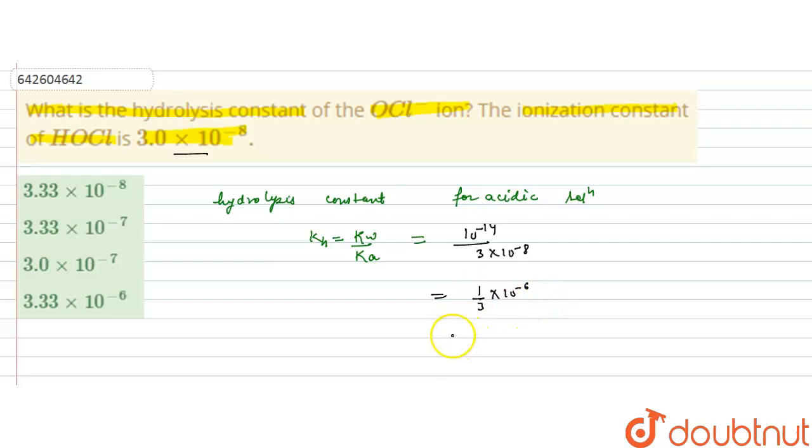So this will give us 1 by 3 into 10 raised to the power minus 6. So this is 0.333 into 10 raised to the power minus 6, or we can write it as 3.3 into 10 raised to the power minus 7.